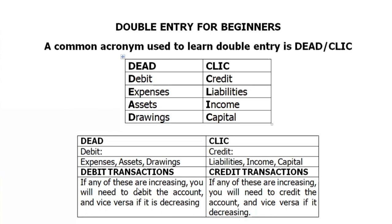For CLIC — the credit transactions — liabilities, incomes, and capital: if any of these are increasing, you will need to credit the account, and vice versa if they are decreasing. That is DEAD CLIC, one of the common acronyms used to learn double entry.